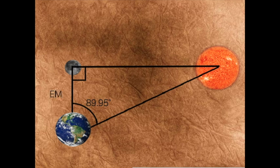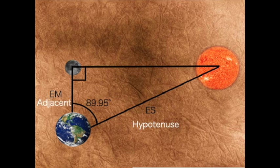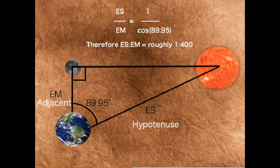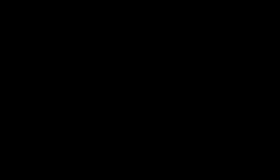So he set to work and measured angle x. He named the distance between the earth and the moon em, and the distance between the earth and the sun es. Using the equation es over em equals 1 over cosine 89.95, he worked out that the sun is roughly 400 times bigger than the moon.